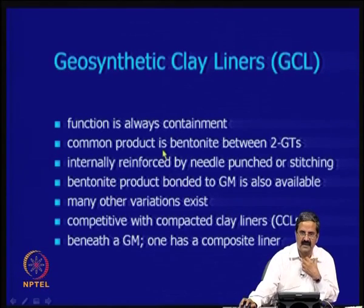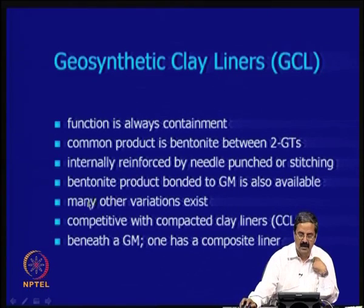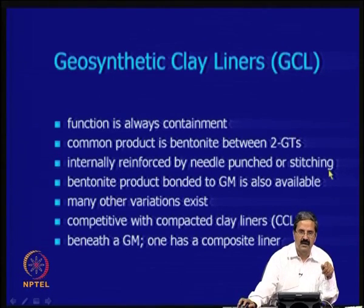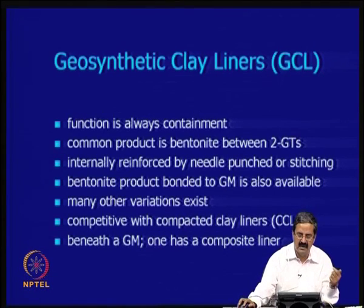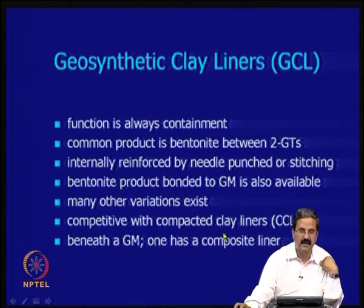The function of GCLs is containment, like clay liners. When clay liners are not effective, it is better to use geosynthetic clay liners because they are manufactured products. The common product is bentonite sandwiched between two geotextiles, internally reinforced by needle punching or stitch bonding to maintain integrity. The bentonite product bonded to a geomembrane is also available — one layer can be a geomembrane, then bentonite, then a geotextile. They are very competitive compared to compacted clay liners.